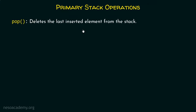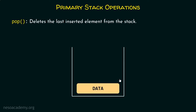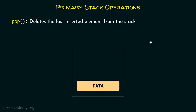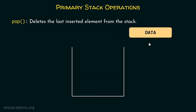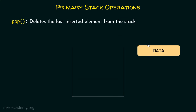The second primary operation is pop. It simply deletes the last inserted element from the stack. Here is the stack and this is the last inserted element. The pop operation simply deletes this data — it moves this data outside the stack.